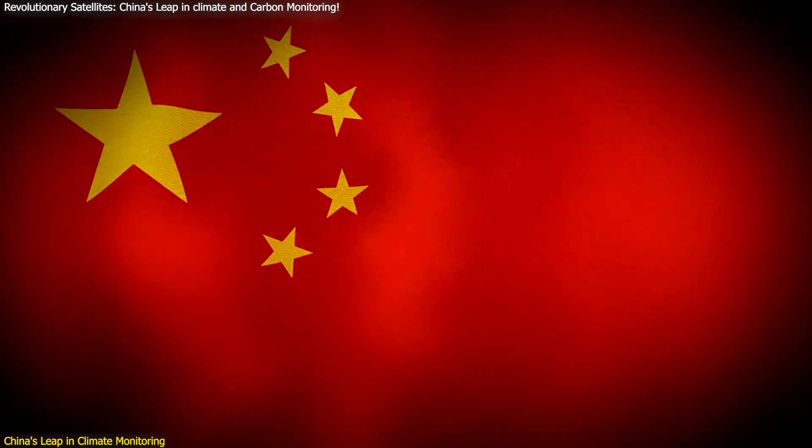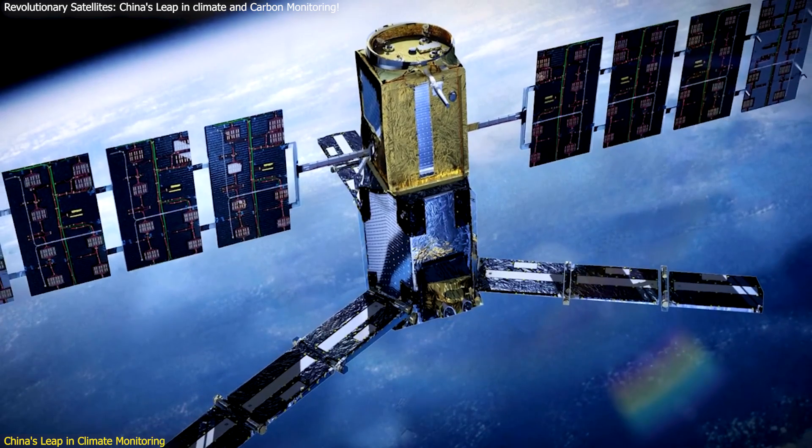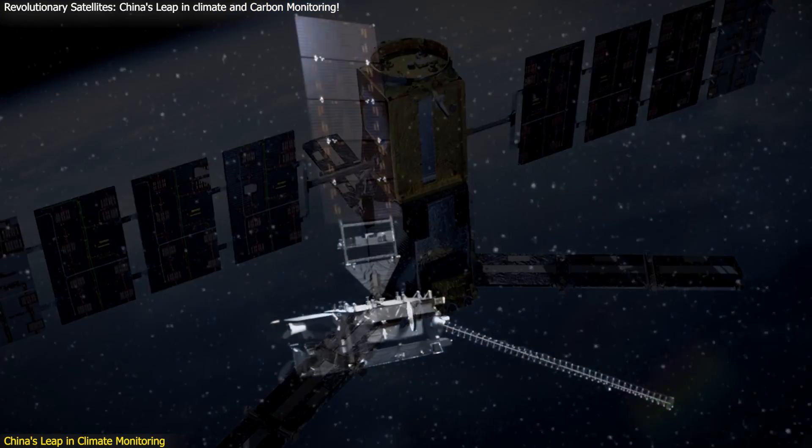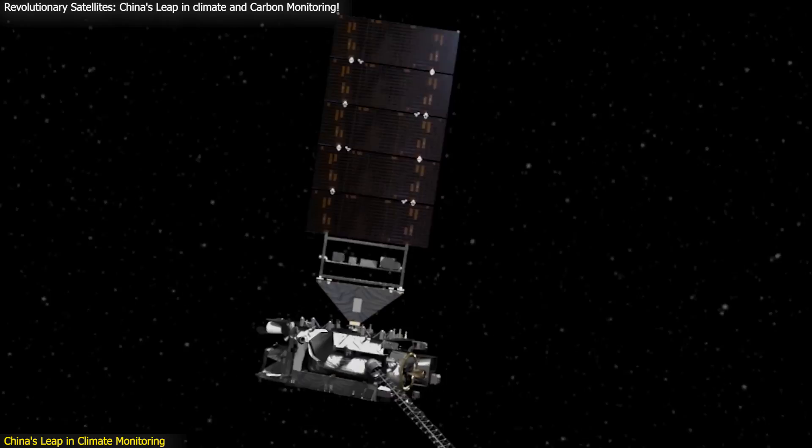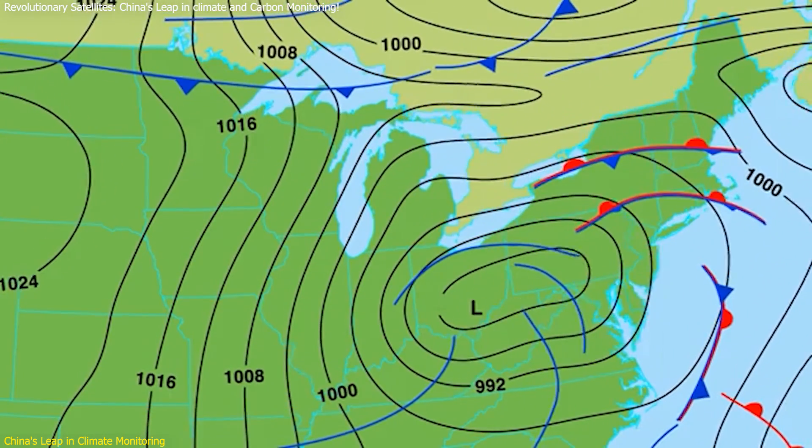China has just made a groundbreaking leap in climate monitoring with the launch of two advanced satellites. These state-of-the-art satellites, designed for atmospheric and terrestrial ecosystem carbon monitoring, are set to revolutionize our understanding of climate change.